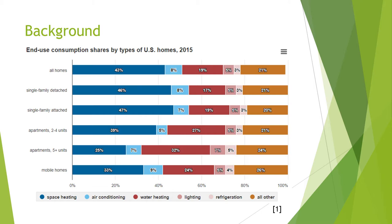The all other category includes televisions, cooking appliances, clothes washers and dryers, and consumer electronics. For my apartment, the washer and dryers aren't in units so the electricity provided to those isn't included in my bill, as well as the space heating and water heating because those are provided by my landlord. This leaves 43% of my energy usage equivalent to 100% of the bill I receive at the end of the month.